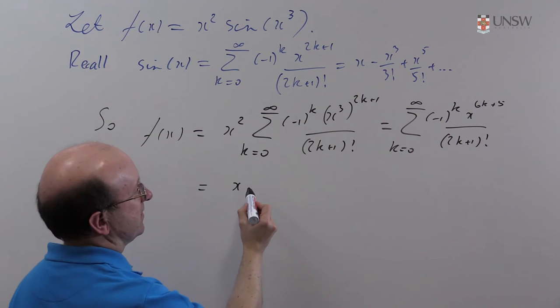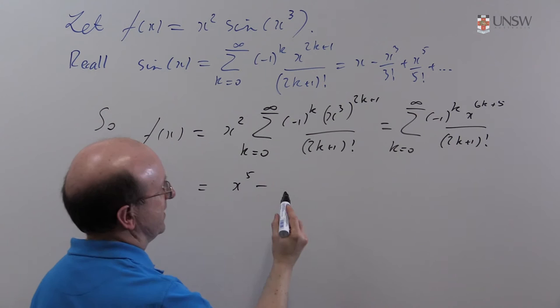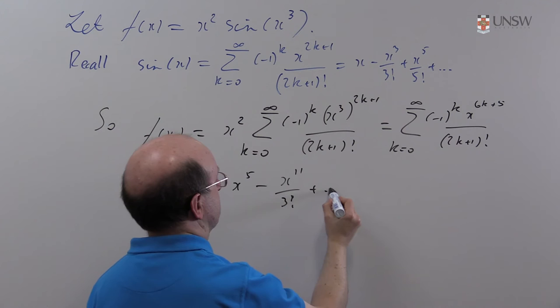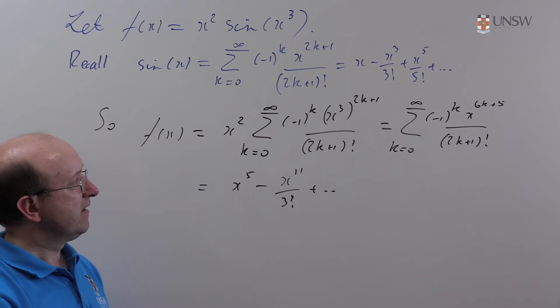And if we write the terms out, we're going to begin with x^5 when k=0, and the next term will be x^11 over 3! plus and so on, and that's as far as we really need to go.